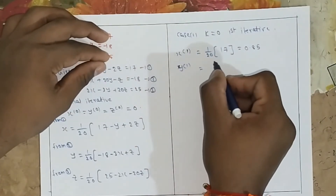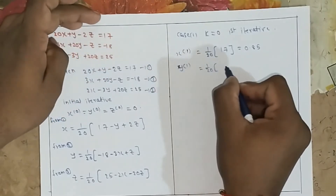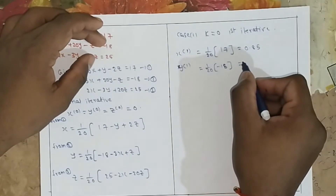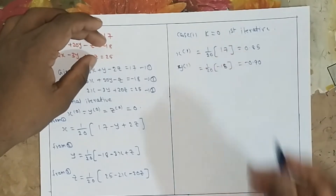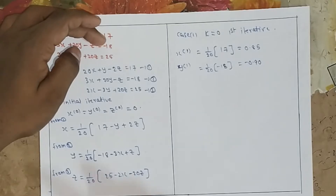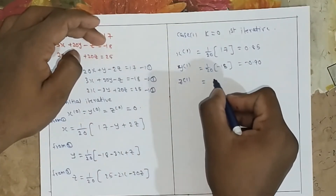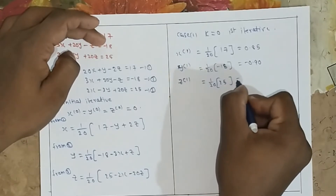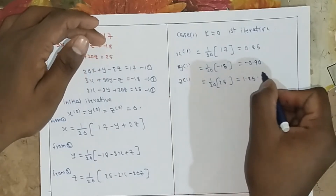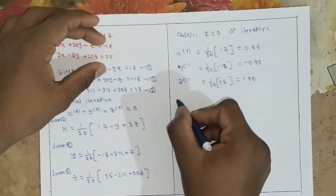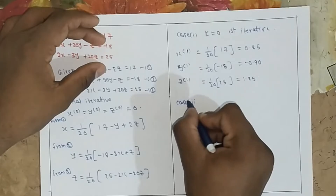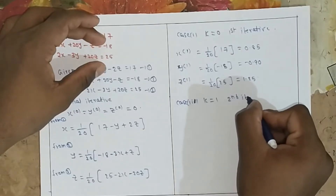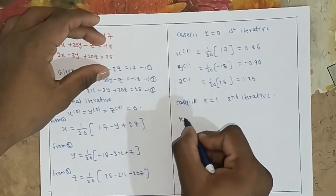For the first iteration: y(1) equals 1 by 20 into minus 18, giving y(1) equals minus 0.90. Then z(1) equals 1 by 20 into 25, giving z(1) equals 1.25.